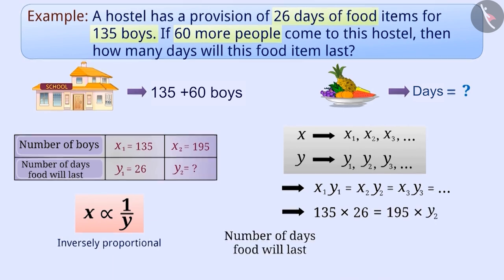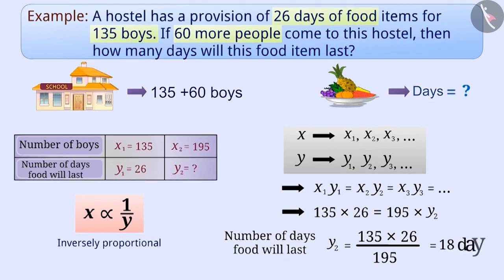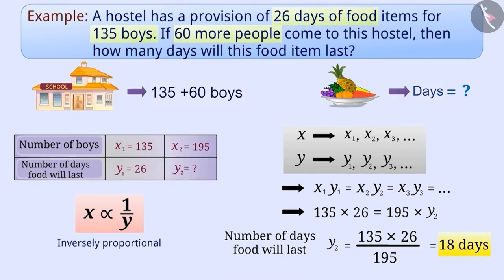Therefore, the number of days the food will last will be y2, which is equal to 135 into 26 divided by 195, which is equal to 18 days. In this way, if 60 boys come to this hostel, then this food item will last for 18 days.